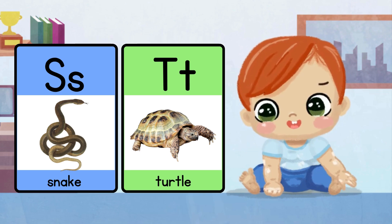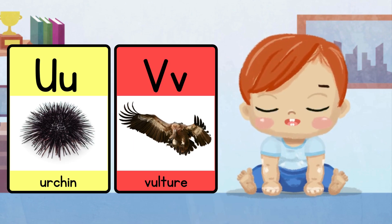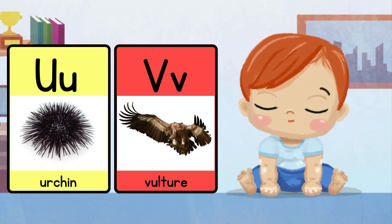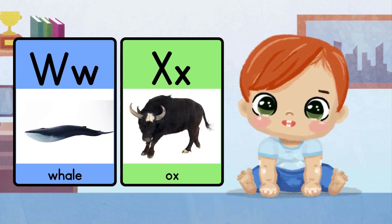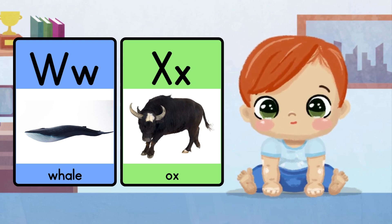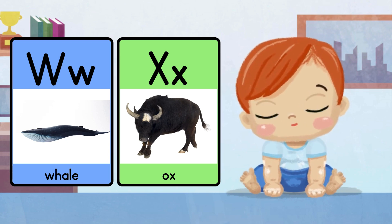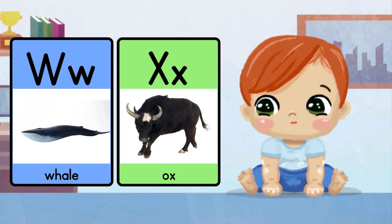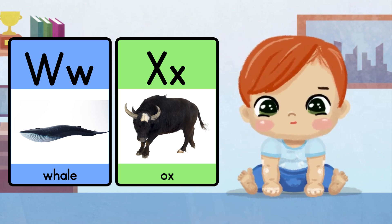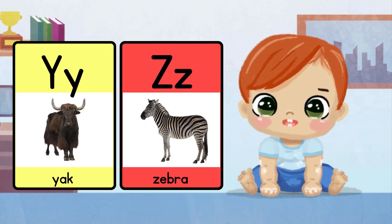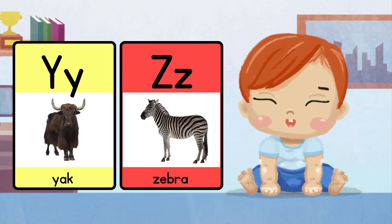T for turtle. U for urial. V for vulture. W for whale. X for ox. Y for yak. Z for zebra.